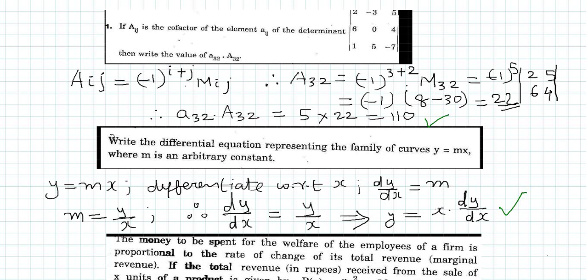Let us do problem number one. We have to find the value of a₃₂ multiplied by capital A₃₂. We know that capital Aᵢⱼ is the cofactor of the element aᵢⱼ. The cofactor capital Aᵢⱼ of an element is given by the formula (−1)^(i+j) multiplied by capital M of ij, where capital M is the minor of ij.